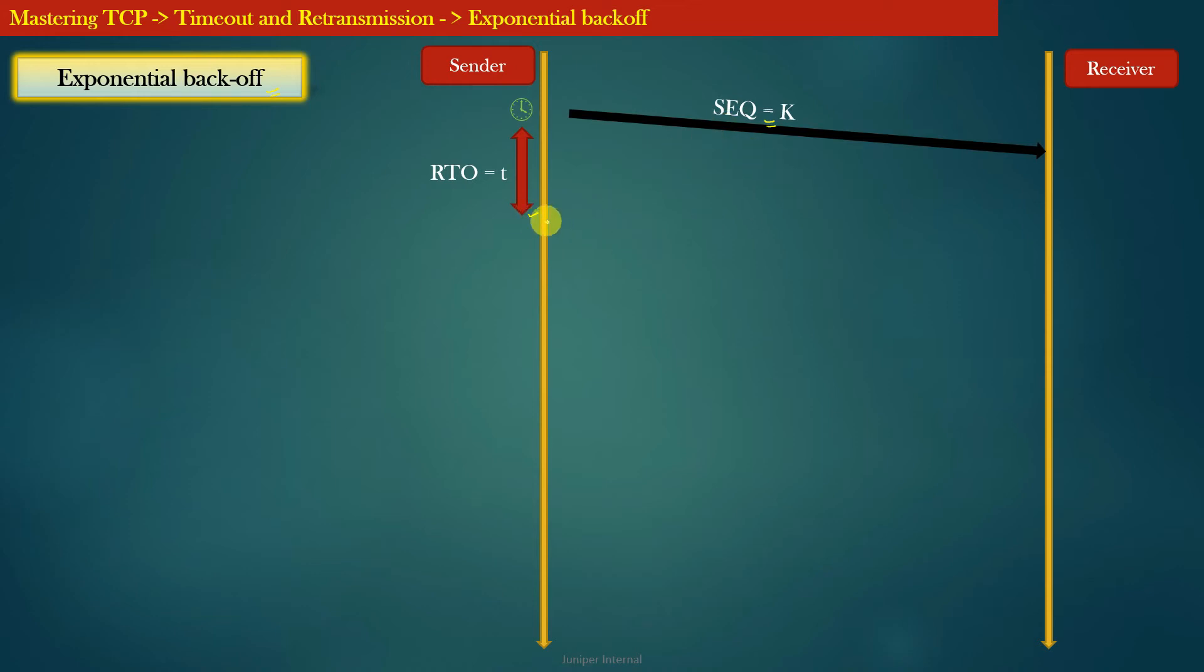When this retransmission timer of this data segment expires, the TCP sender retransmits the same data segment again and restarts the retransmission timer. But this time the value of RTO is doubled from its previous value.